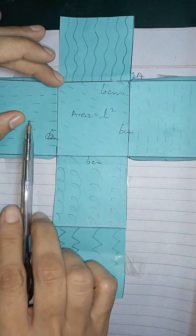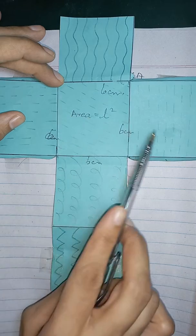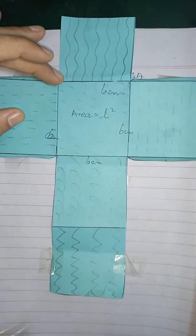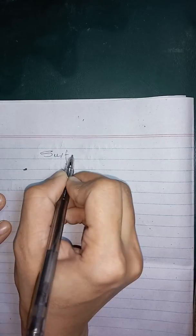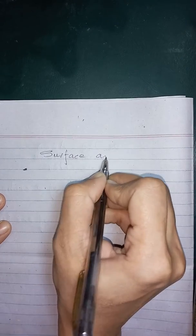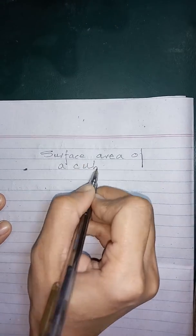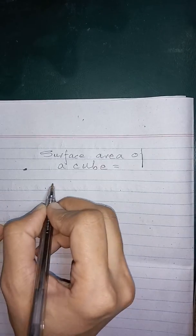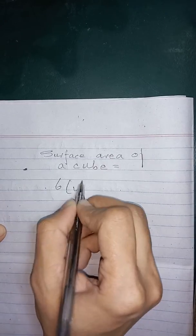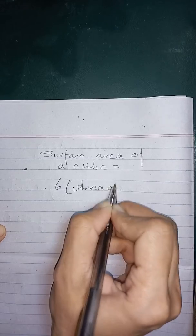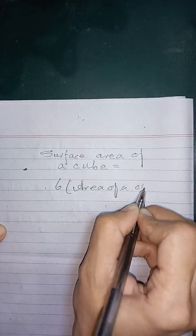And how many faces are there? 1, 2, 3, 4, 5, 6. So the surface area of a cube will be 6 times the area of a single face.